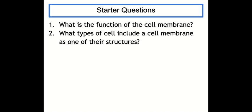Hi folks, welcome to the first lesson of National 5, Unit 1, Key Area 2, Transport Across Cell Membranes. This is part one of the lesson where we're going to focus on basics such as the composition of the cell membrane and why only certain substances can pass through it by looking at one experiment in particular.